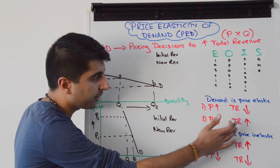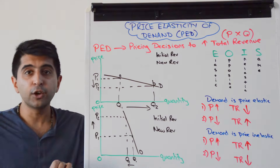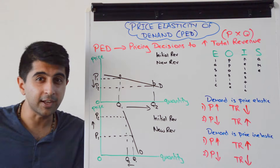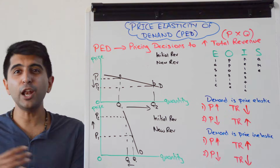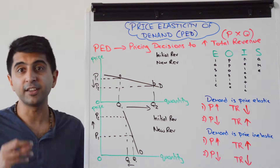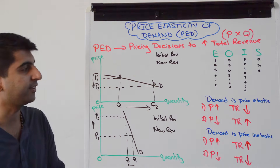Whereas if demand is price elastic and you reduce your price, quantity demanded is going to increase massively. So you're selling loads more at a slightly reduced price, and total revenue is going to massively increase.